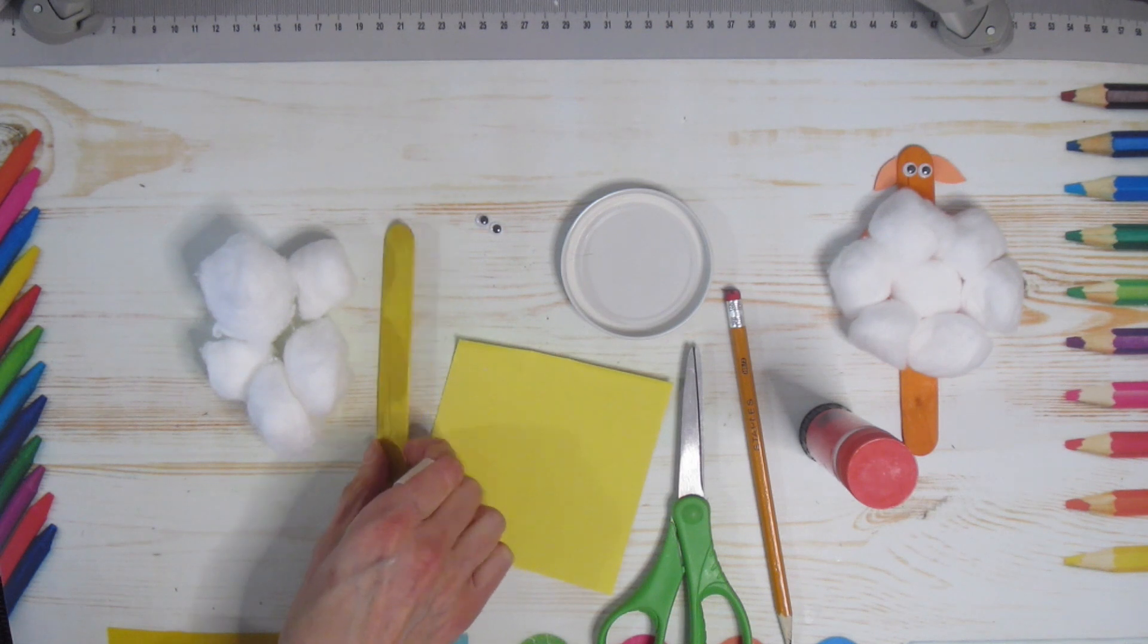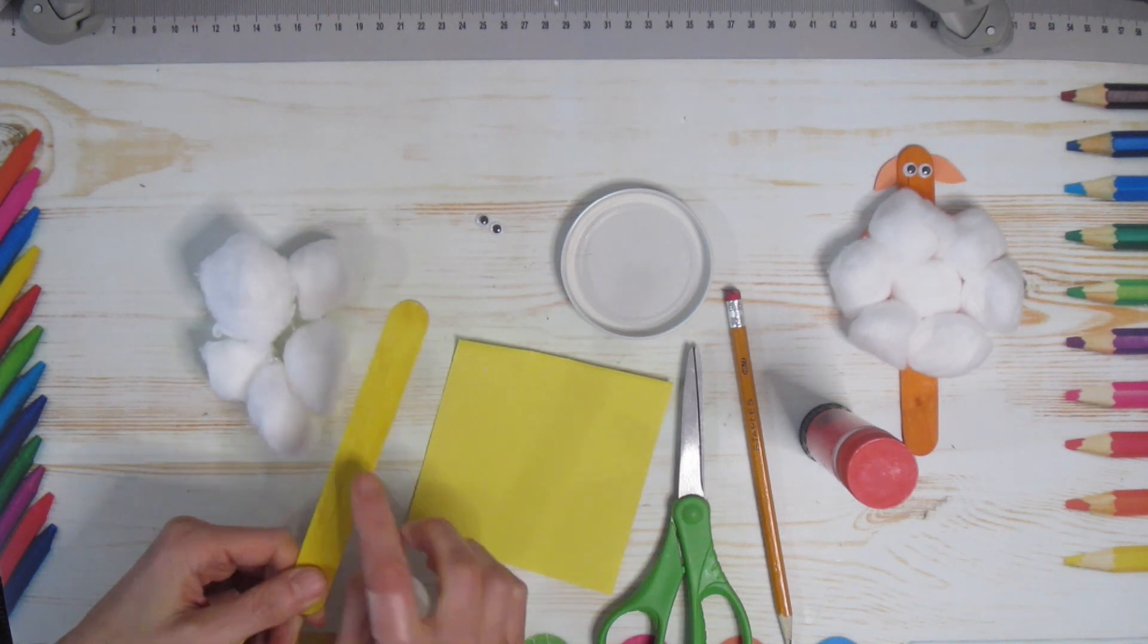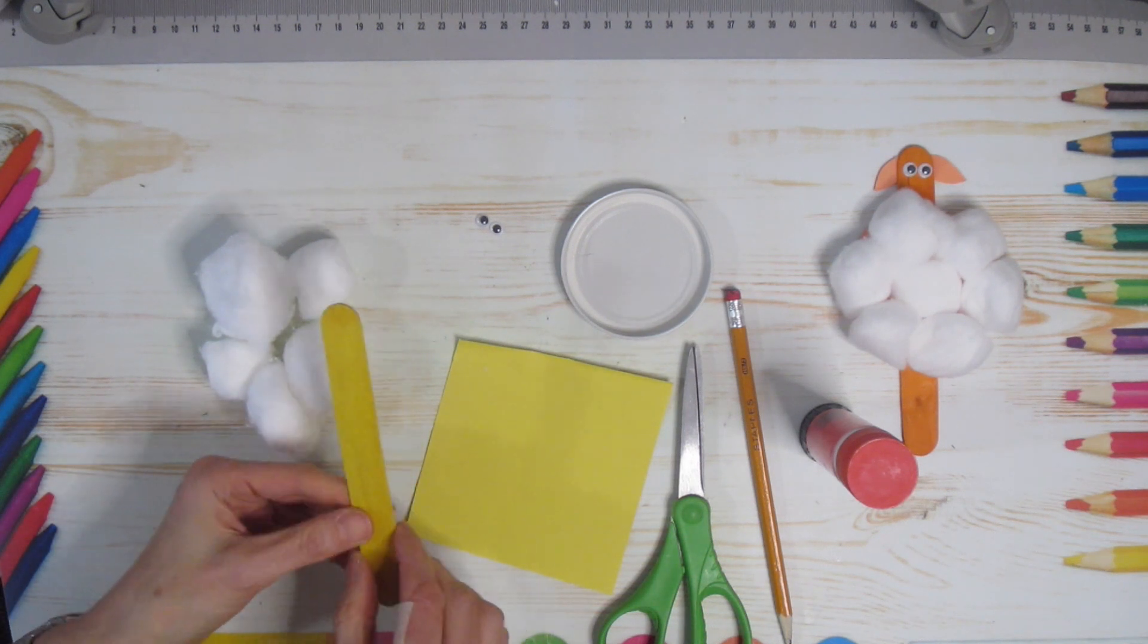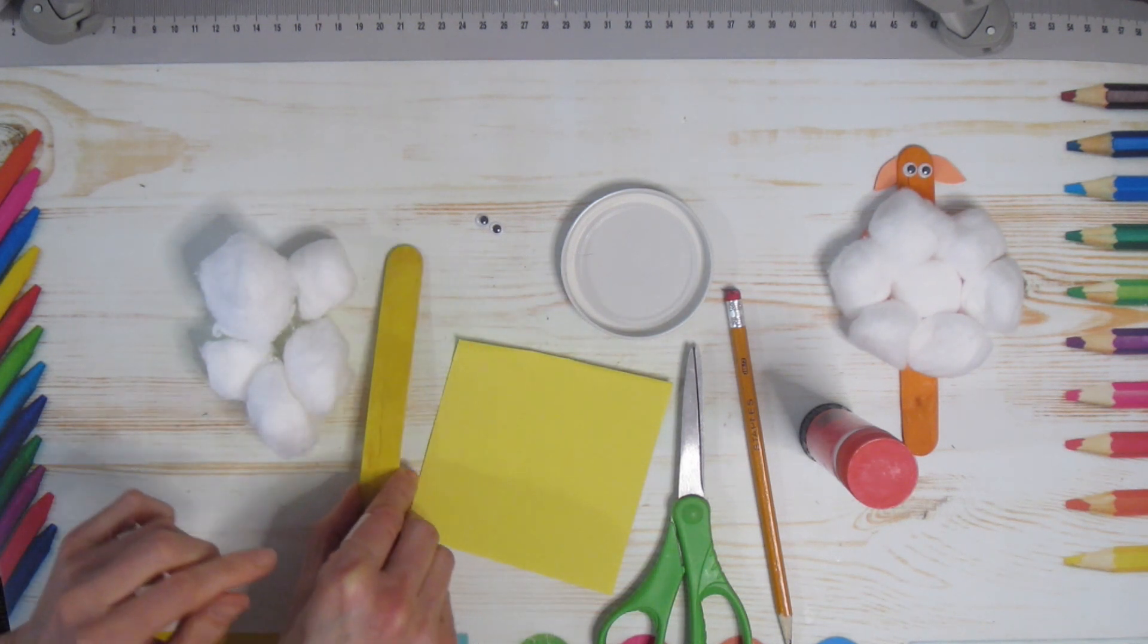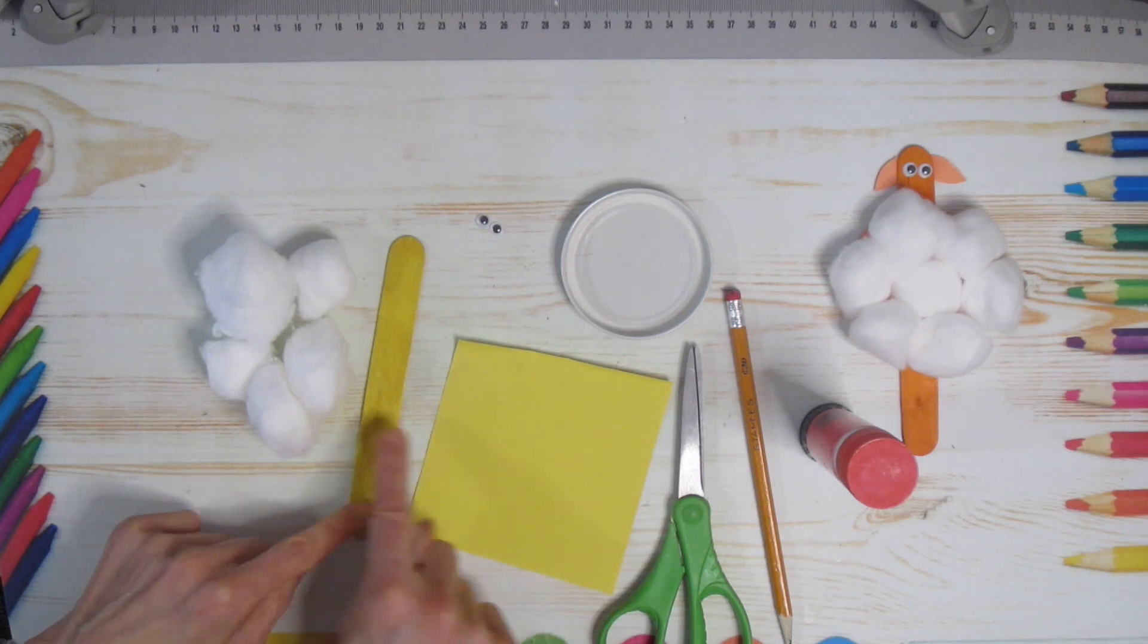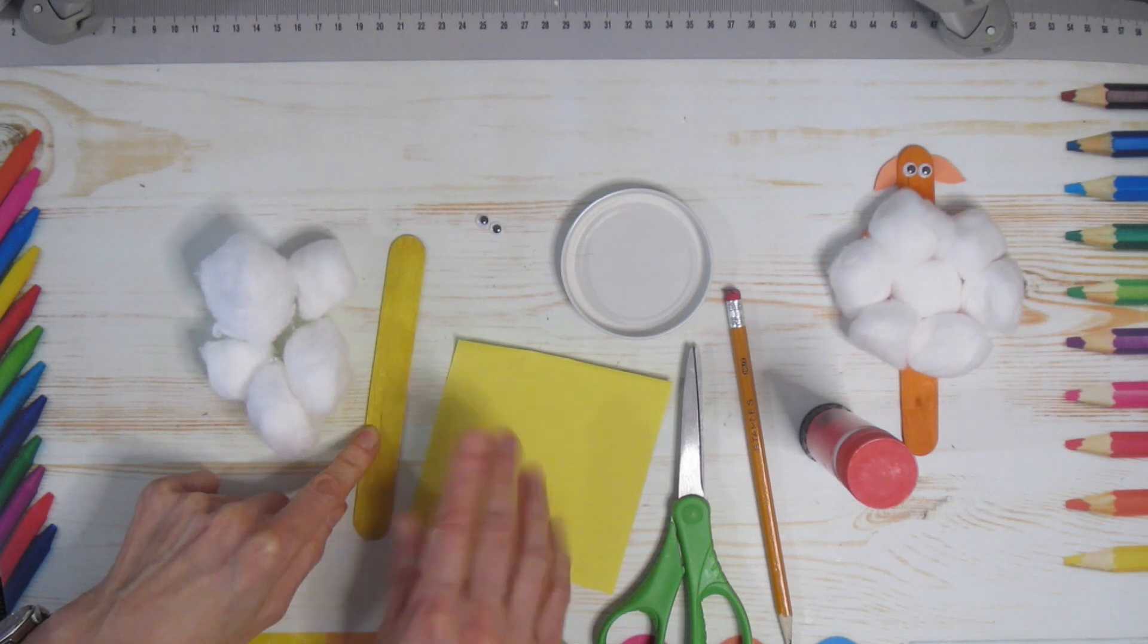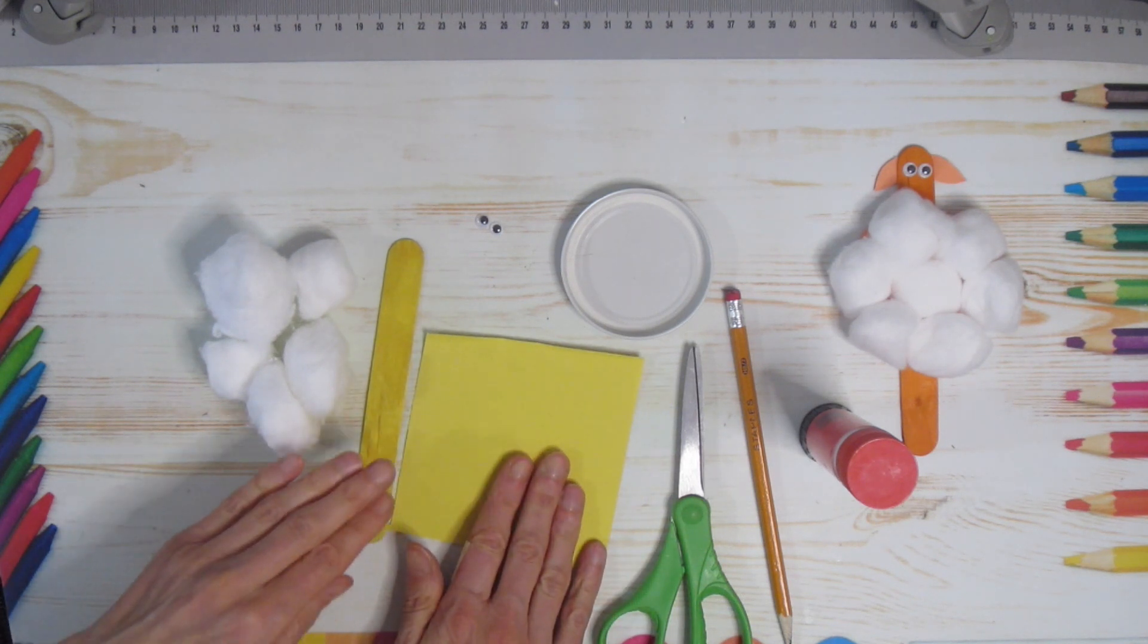I am using a thicker popsicle stick. A thinner one would also work. I like these thicker ones just because they look a little bit bigger and they're sturdier, but a thinner one would work. I'm using the same color paper but it doesn't matter, you could use whatever you have.